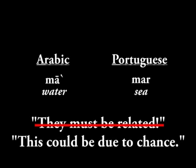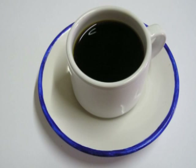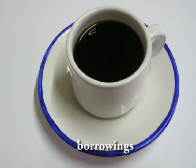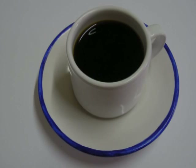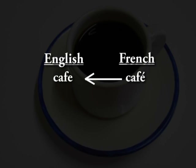When one language comes into contact with another language, it often borrows words from that other language — especially for concepts that it doesn't already have. For example, in English we borrow the word 'café' from French 'café.' The two words aren't genuine cognates that developed independently in English and French. Rather, English speakers at some point borrowed the word 'café' from French. The same analysis helps us when we look at the basic core vocabulary list of English.